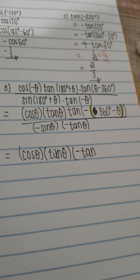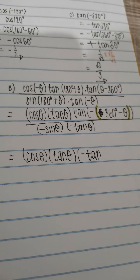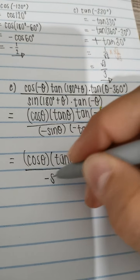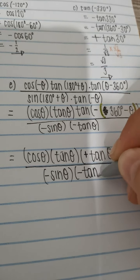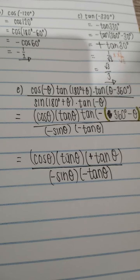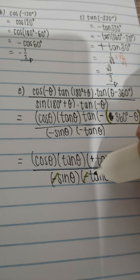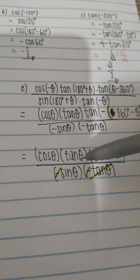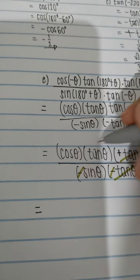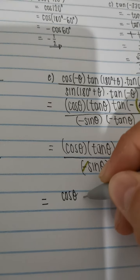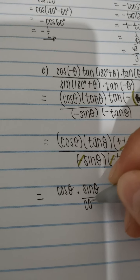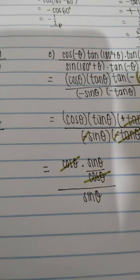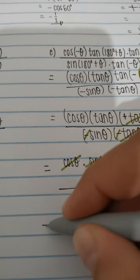360° − θ is in the fourth quadrant where tan is negative, so negative tan gives another negative, making it positive. We now have cos(θ) times tan(θ) over negative sin(θ) times negative tan(θ). The two negatives cancel, leaving cos(θ) times tan(θ) over sin(θ). Using the identity tan(θ) = sin(θ)/cos(θ), cos(θ) cancels with cos(θ) and sin(θ) cancels with sin(θ). The final answer is 1.